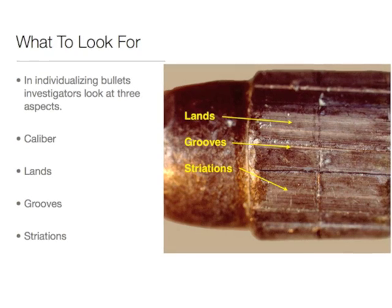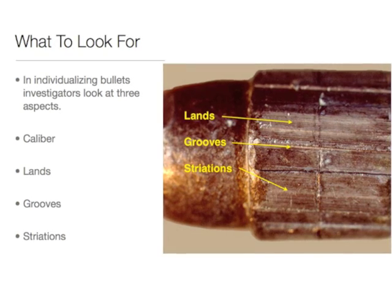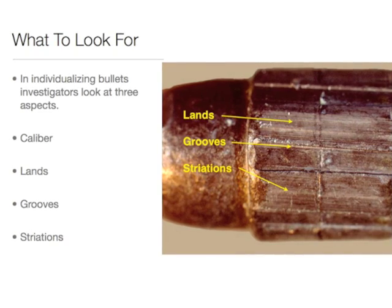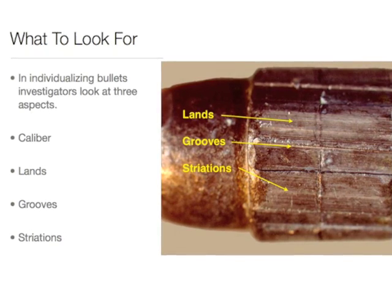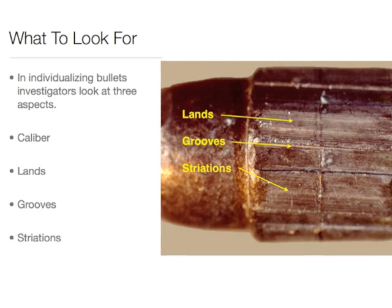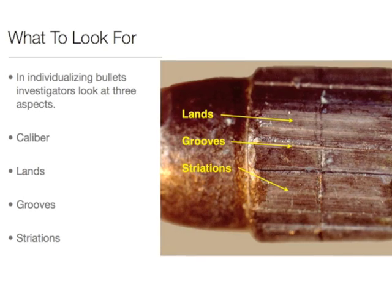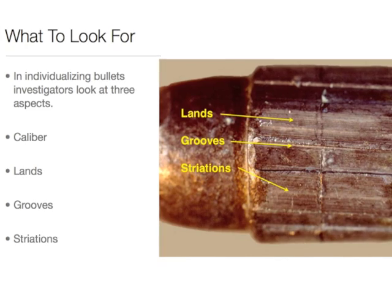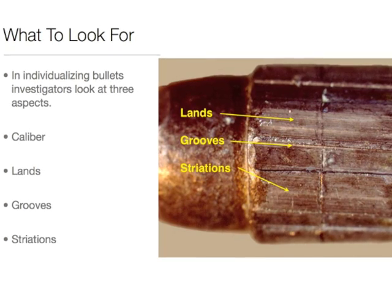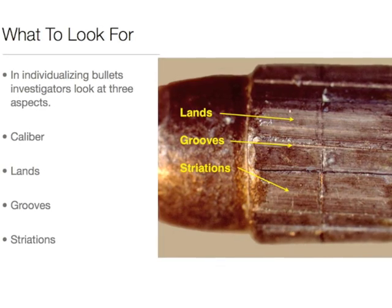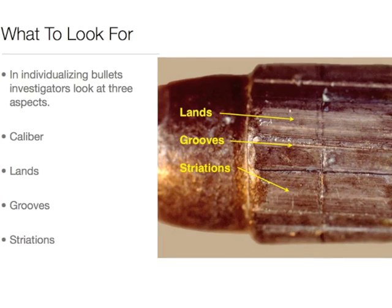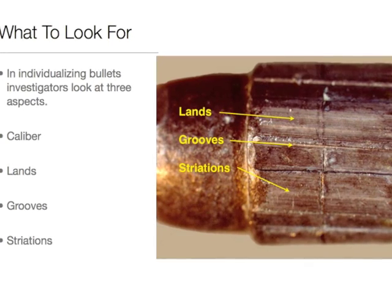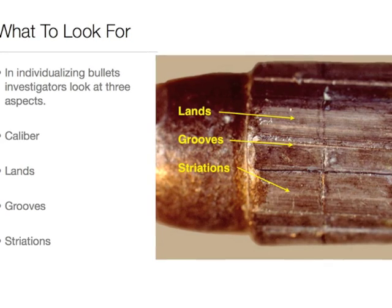As stated earlier, as the bullet travels through the barrel, it spins and it gets impressed on by the lands and grooves. Here you can see an example of this impression. The lands are the raised area, the grooves are the grooved area, but there are also striations caused by the manufacturing process, and this is what helps individualize the bullet to a specific gun.